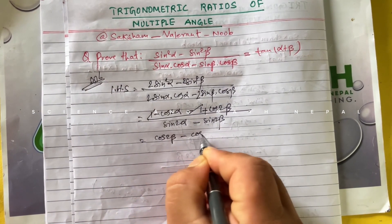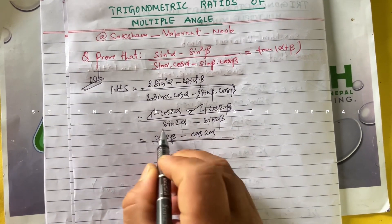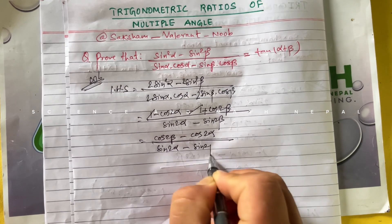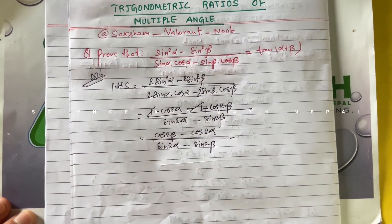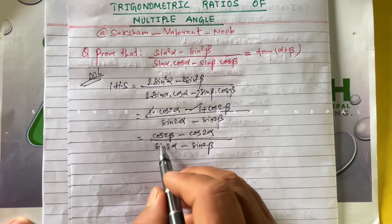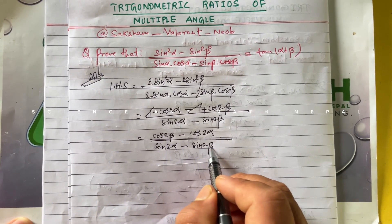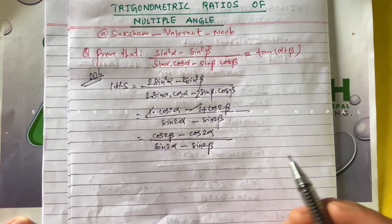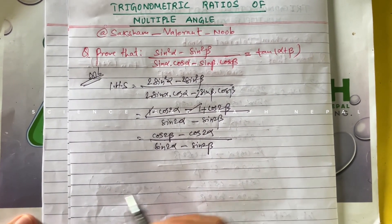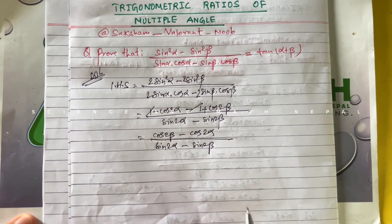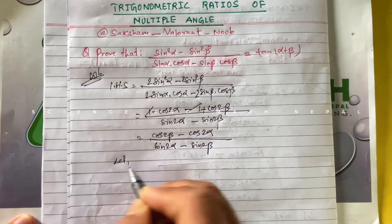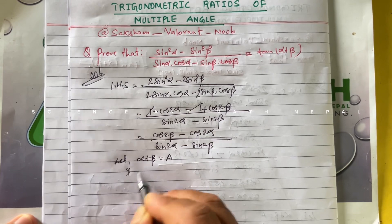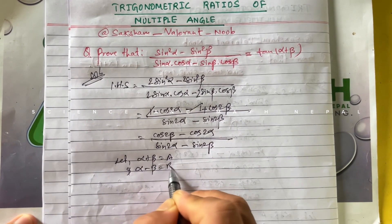So we have (cos2β - cos2α) divided by (sin2α - sin2β). In the previous episode 11, I used the sinC - sinD and cosC - cosD formula. I'm not going to use that formula here — let's go for another approach. Let α + β = a and α - β = b.